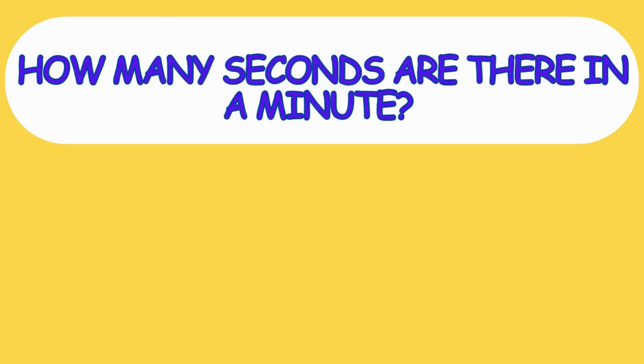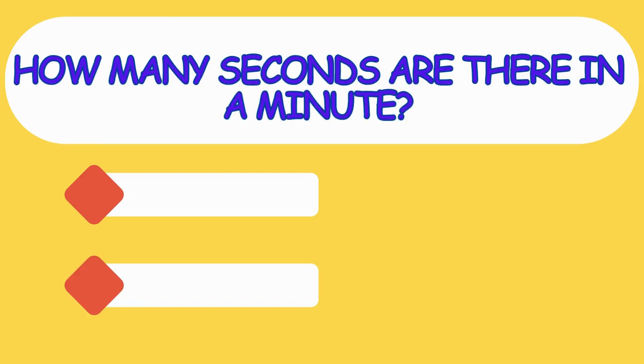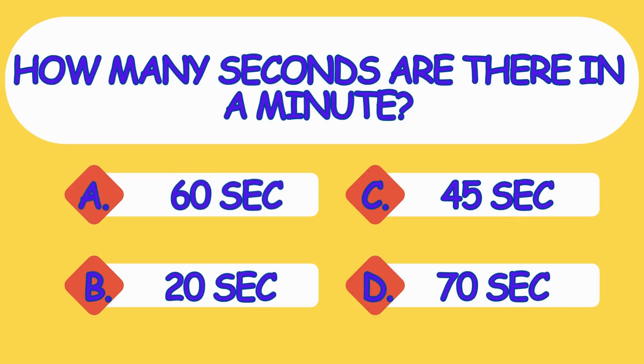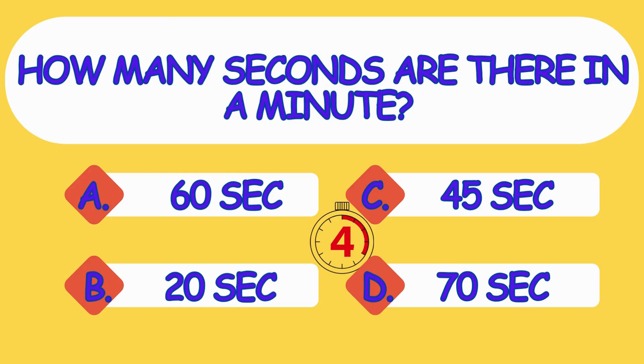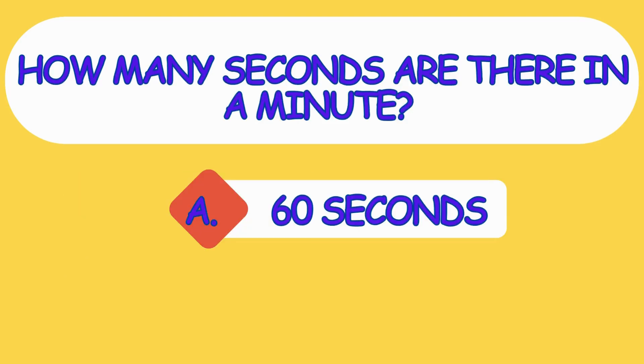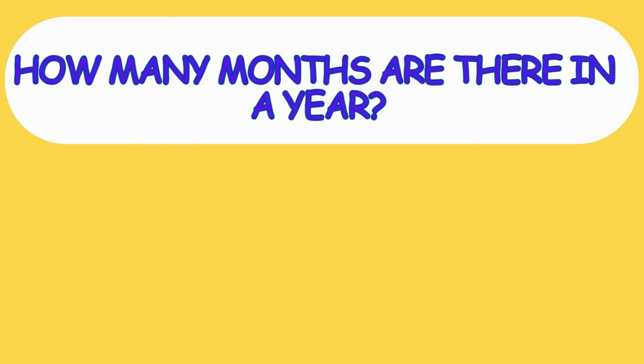How many seconds are there in a minute? A. 60 seconds, B. 20 seconds, C. 45 seconds, D. 70 seconds. The answer is option A, 60 seconds.